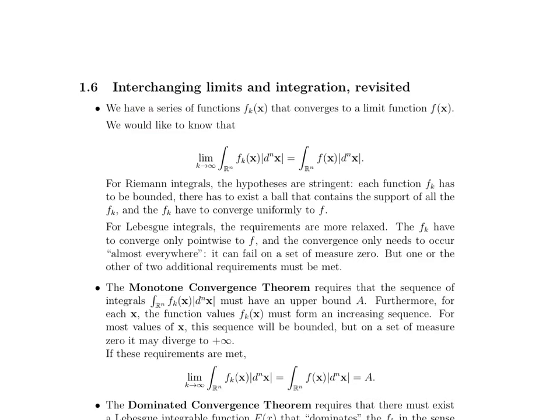Now for Riemann integrals, we talked about this in the beginning. The hypotheses are a little bit strict. Each of the functions, each of the f sub k's we mean, have to be bounded. They have to have a ball that contains the support of all of the f sub k's, and the f sub k's have to converge uniformly to that limit function. For Lebesgue integrals though, the requirements are not quite so strict. The convergence only has to be pointwise to the limit function. It doesn't have to be uniform, and the convergence only needs to occur almost everywhere. So it can fail, but only on a set of measure zero. But one or the other of the two additional requirements must be met.